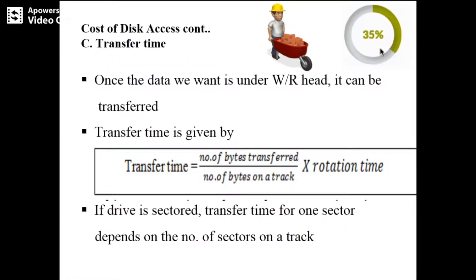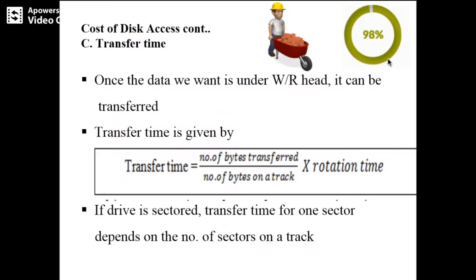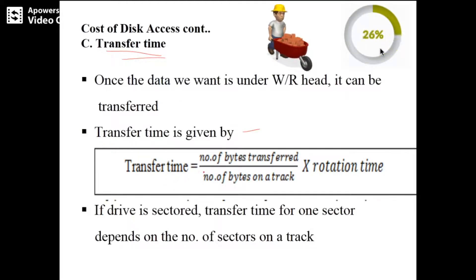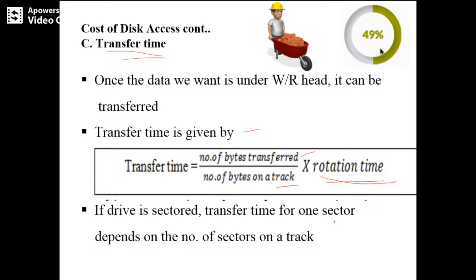Transfer time is the next cost. Transfer time is the time needed to transfer data that is under the read-write head to the main memory. It can be written as: transfer time equals number of bytes transferred divided by number of bytes on a track, multiplied by rotation time. If the drive is sectored, the transfer time for one sector depends on the number of sectors on the track — if more sectors, transfer time will be more.